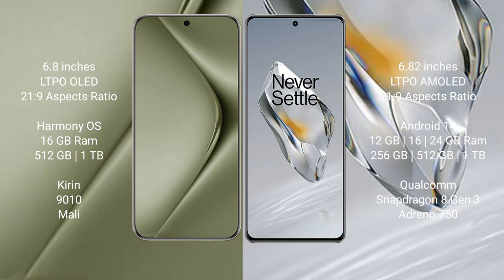The Huawei Pura 70 Ultra runs on the HarmonyOS operating system, while the OnePlus 12 runs on Android 14. The Huawei Pura 70 Ultra comes with 16GB RAM and 512GB or 1TB internal storage, with the Kirin 9010 processor.